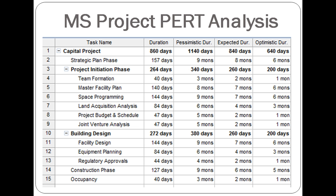Here is a table of the values that were inputted into Microsoft Project for conducting the PERT analysis. On the right are the pessimistic, expected, and optimistic projections for the duration of each of the subtasks, which are based on the input of experts. For the entire project, in a pessimistic scenario it will take 1,140 days, in an optimistic one 640 days, and in a realistic case about 840 days. Once inputted, a single estimated duration is calculated based on all three of these values.